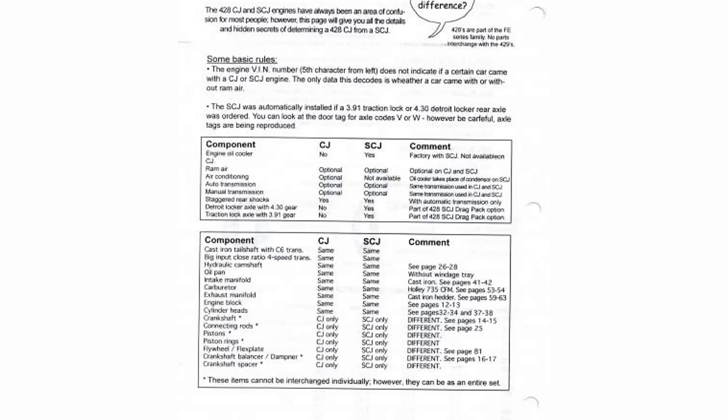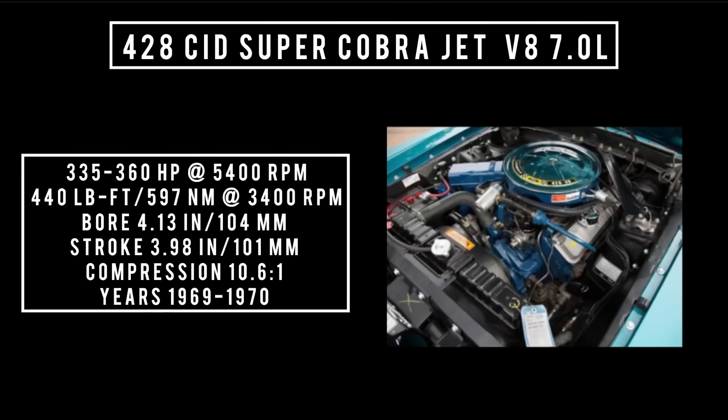Introduced in 1969: the 428 Super Cobra Jet. It used the same top end as the Cobra Jet, but the crankshaft and connecting rods were strengthened with cap screws instead of bolts for greater durability, built to withstand higher RPMs. It could produce anywhere between 335 to 360 horsepower at 5,400 RPM, 440 pound-feet or 597 newton meters at 3,400 RPM, with a bore of 4.13 inches and a stroke of 3.98 inches. Compression was 10.6 to 1. Offered from 1969 through 1970, could be found in the Torino and similar cars.